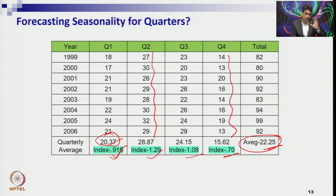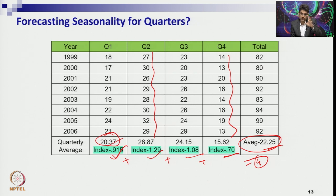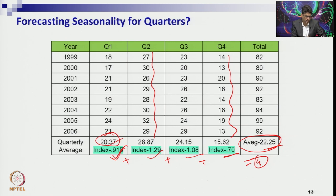In the previous monthly case, you had 12 periods from January to December repeated every year, so you calculated 12 indices and their sum should be 12. But here you have 4 quarters, so the sum of all 4 indices should be 4. If the sum is not 4, you calculate the proportionate value to correct it.